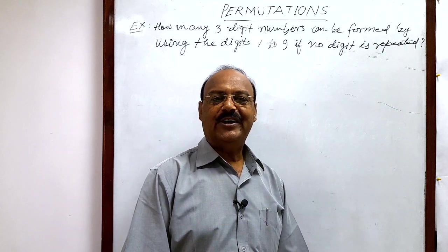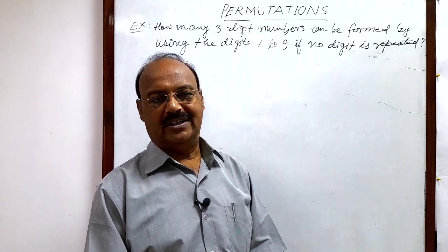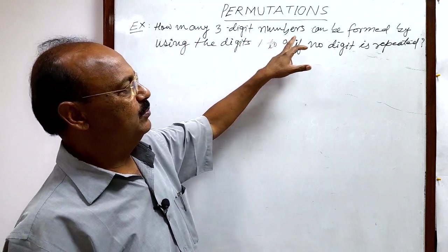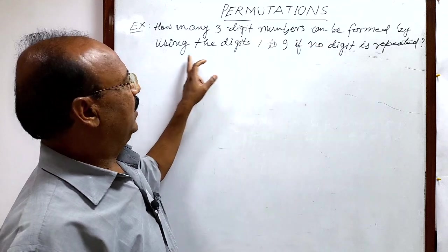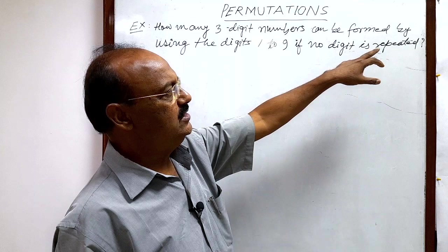Welcome students. Today we are going to see a very simple and interesting problem from the topic of permutations. The question is: how many three-digit numbers can be formed by using the digits 1 to 9 if no digit is repeated?